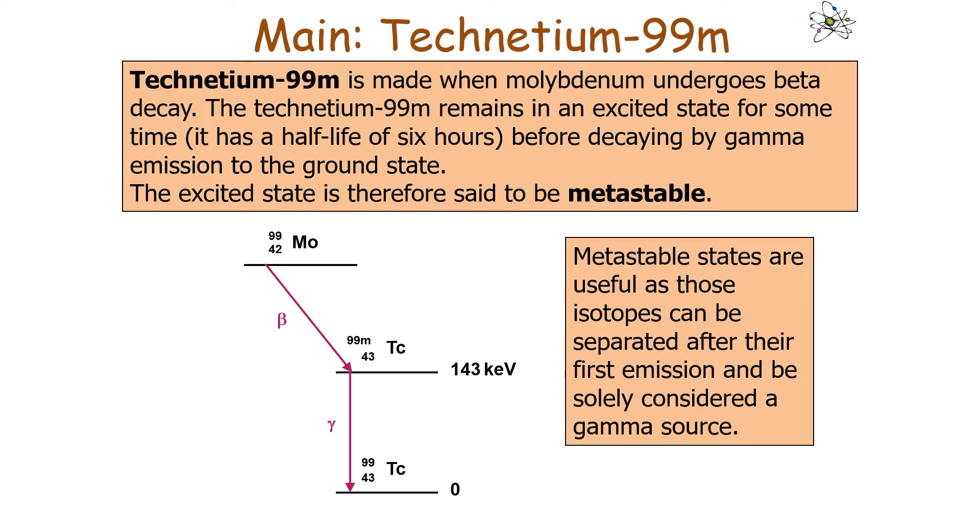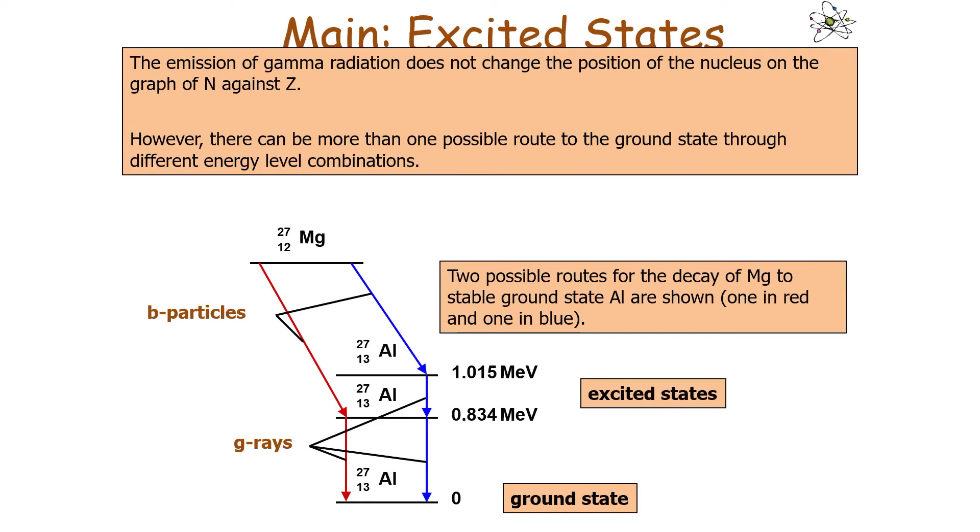Like we mentioned in a previous lesson, the emission of gamma radiation does not change the position of a nucleus on the graph of N against Z.